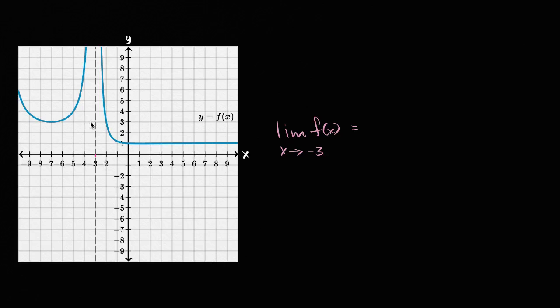If anything, it looks like we have an asymptotic discontinuity here. It looks like on the left side of x equals negative three, we're approaching infinity, and on the right side, it looks like we're approaching infinity as well.